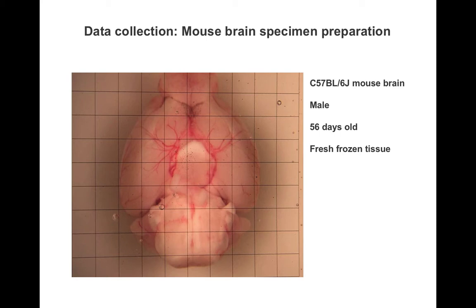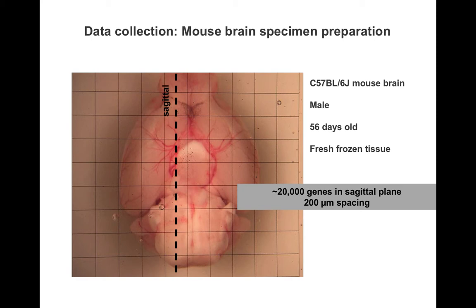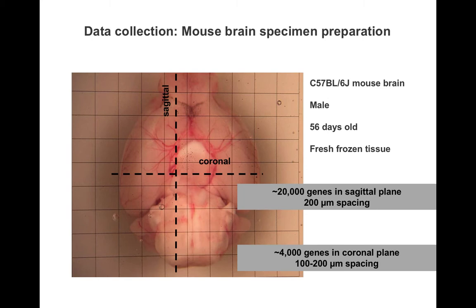The initial survey looked at approximately 20,000 genes in the sagittal plane, starting from just past the midline through most of the brain. For a non-random set of approximately 4,000 genes, data were collected in the coronal plane, resulting in bilateral expression signal through almost the full extent of the brain.